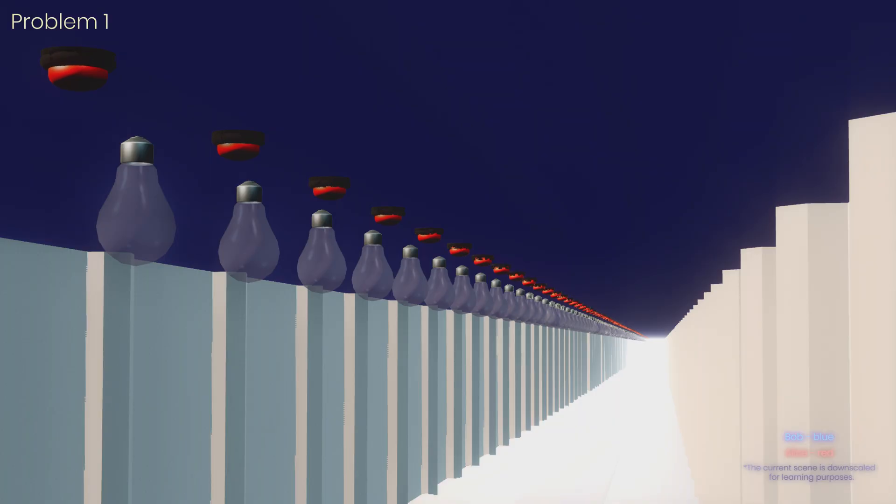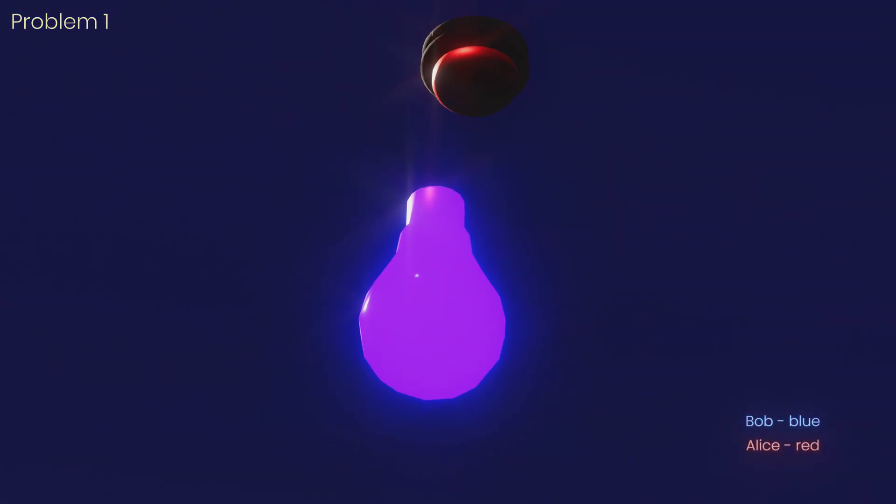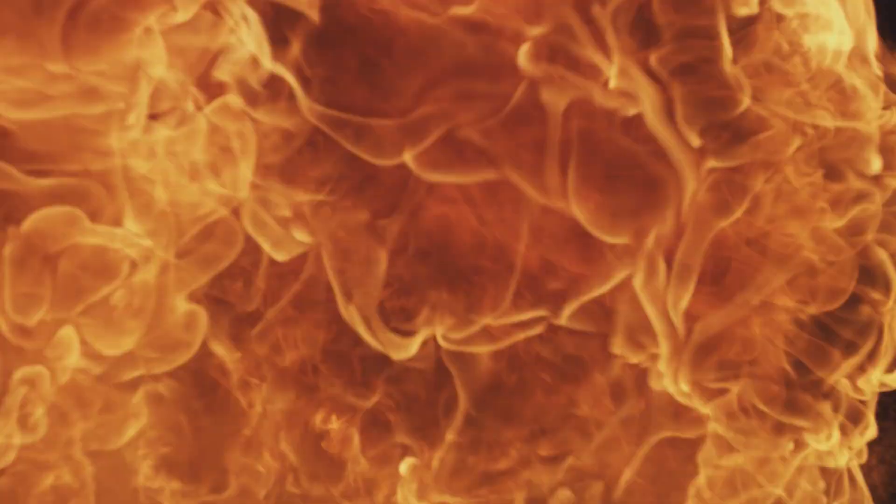Alice, after reading the guide, decides to flip every 42nd switch. Bob, for no particular reason, decides to flip every 69th switch. However, the switches have a fault. When a switch is flipped more than once, the bulb explodes. Which bulb will explode first?